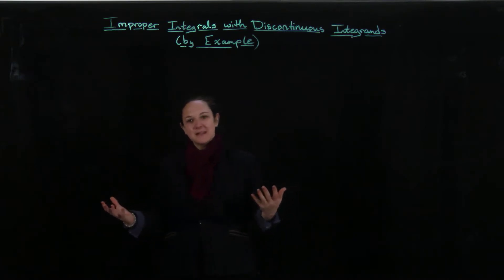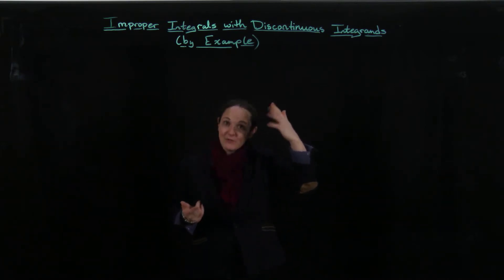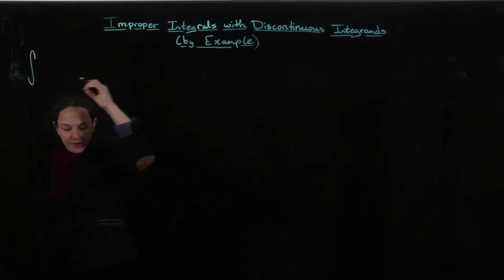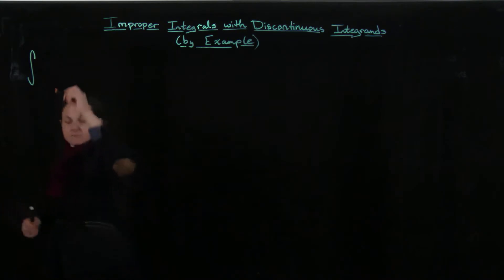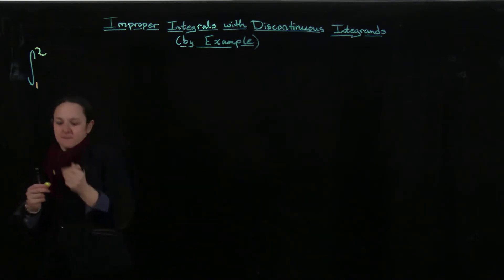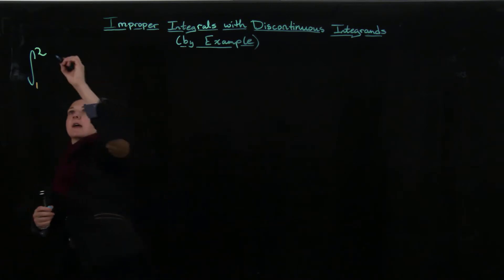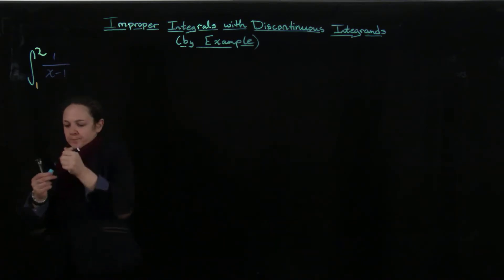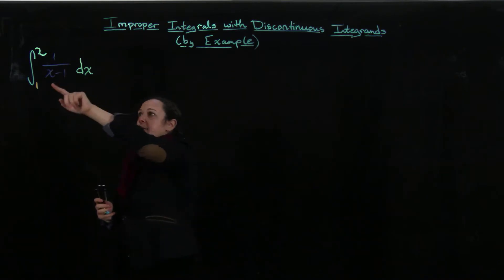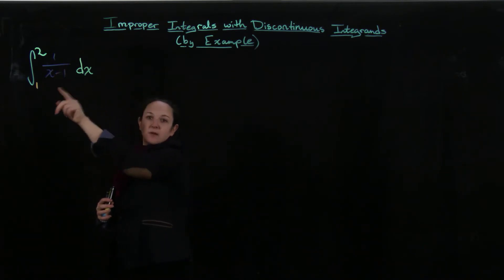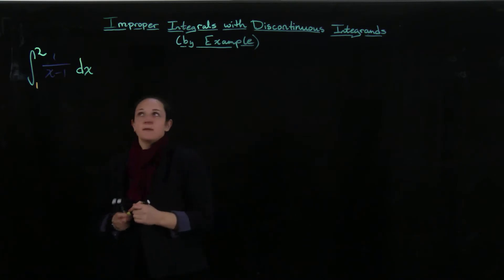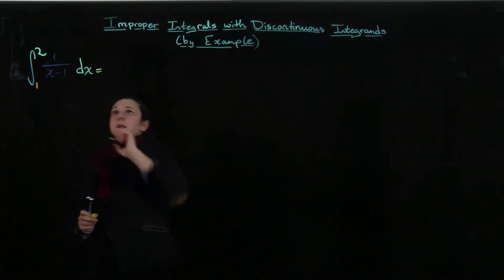So this is kind of by example, and what we're doing is instead of having one of the bounds be infinite, we're going to have one of the bounds be somewhere where the function is undefined, but we're still going to handle this by taking a limit. We're going to handle this very similarly to how we did in the case of an infinite bound.